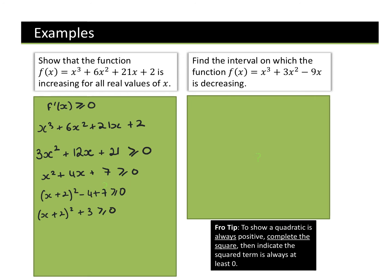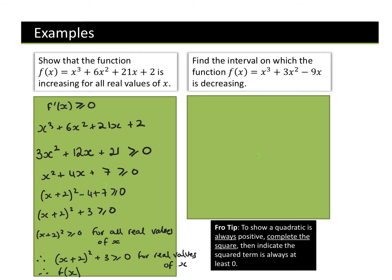We cannot just stop there — we have to write a specific thing. (x + 2)² ≥ 0 for all real values of x. Therefore, (x + 2)² + 3 ≥ 0 for all real x. Therefore, f(x) is increasing.